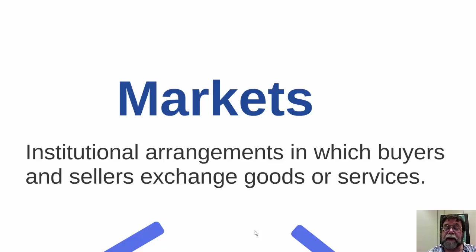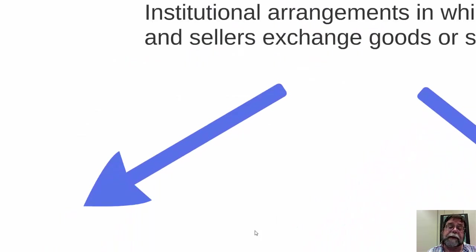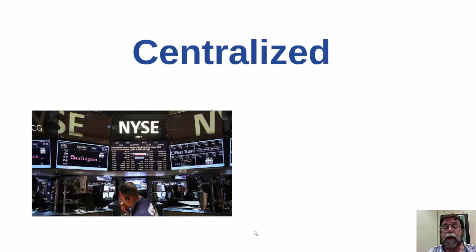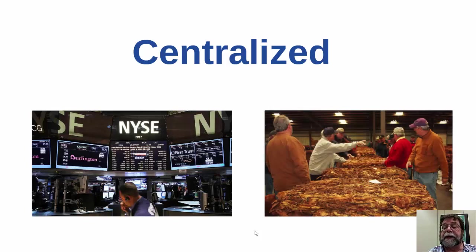A market is nothing more than an institutional arrangement in which buyers and sellers exchange goods and services. These markets may be centralized, in which all trade takes place in one central location, as in the case of the New York Stock Exchange or commodity markets such as this auction market depicted here for tobacco.